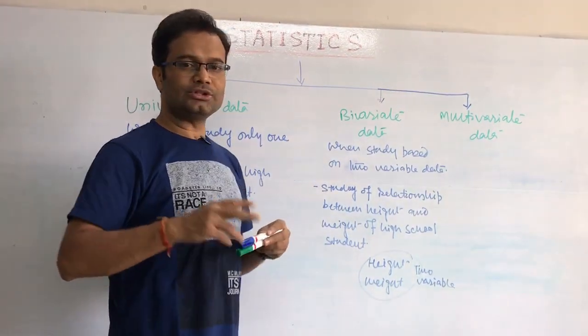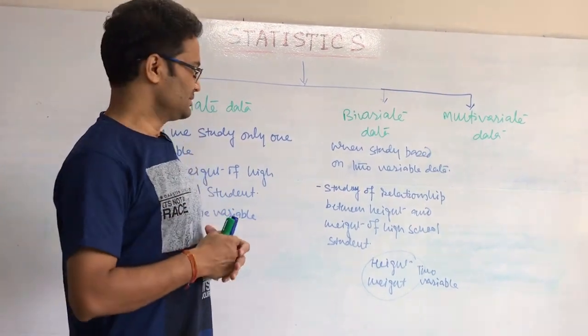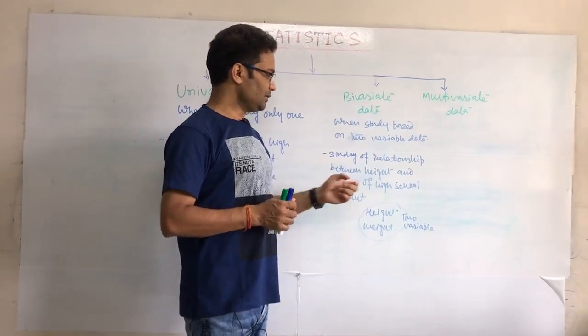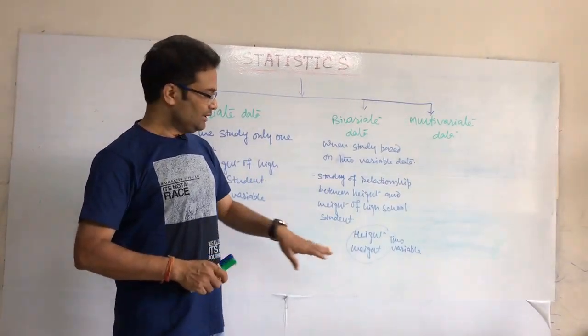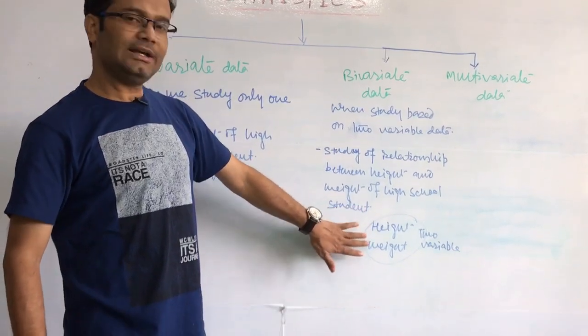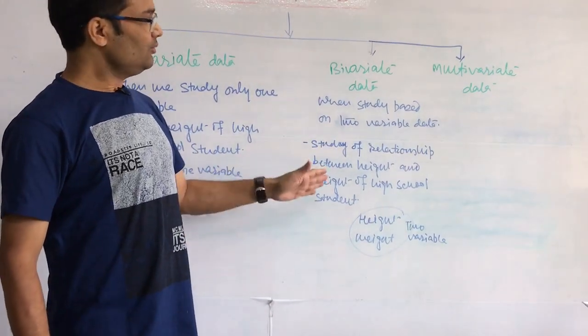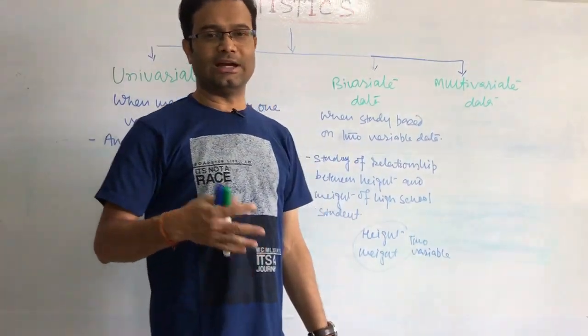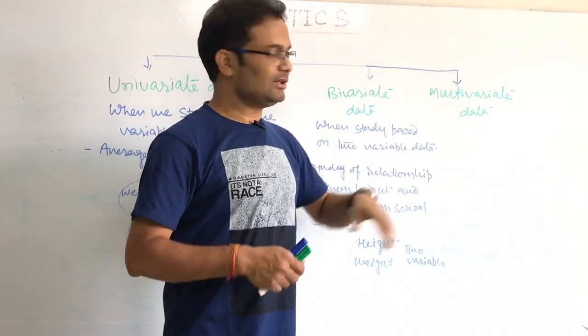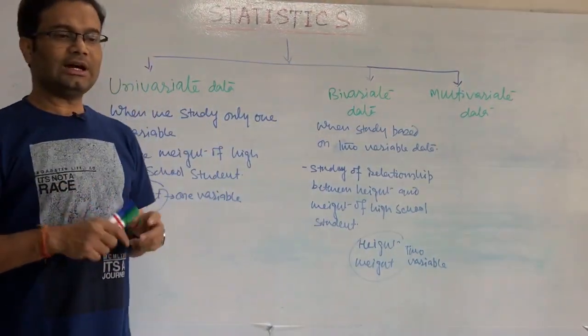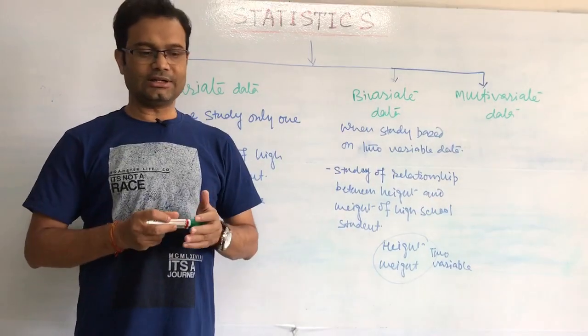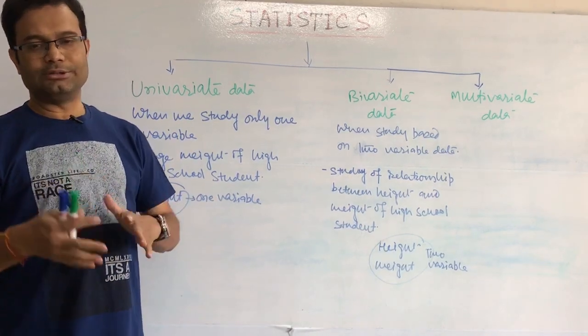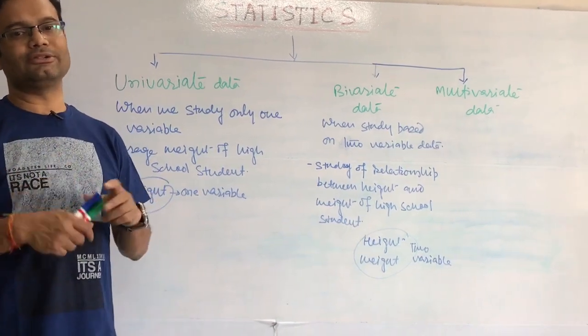Bivariate, when we use two variables for our study purpose. For example, study of relationship between height and weight of high school students. Here you can say we are using two variables: height and weight. If you consider more than two values of data for some kind of study or analysis, those would be called multivariate data. These are some basic fundamental concepts for statistics and then next video we will go on the data qualitative, data quantitative, how to analyze all those things.